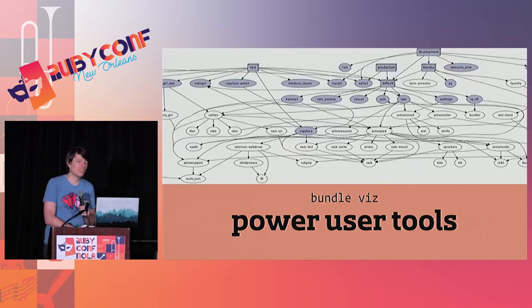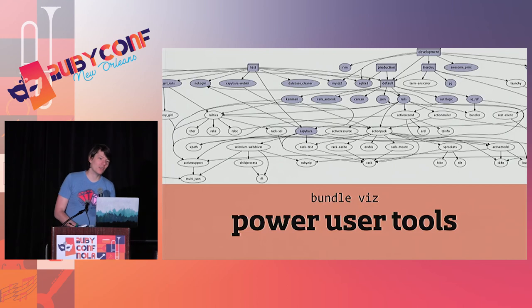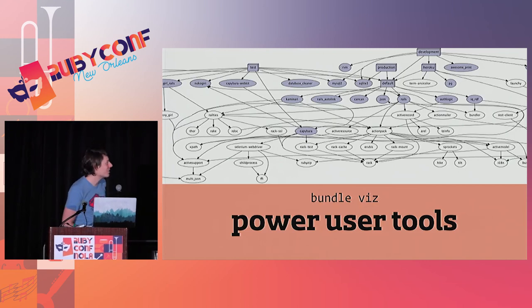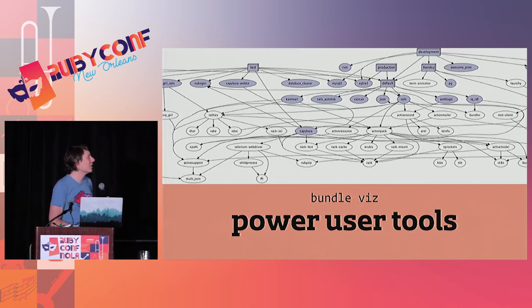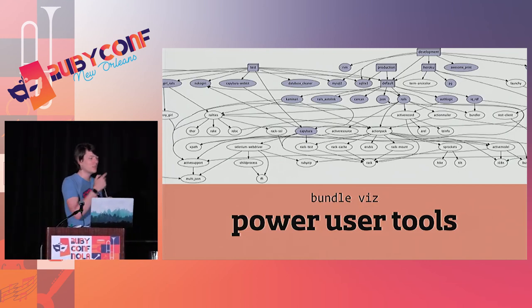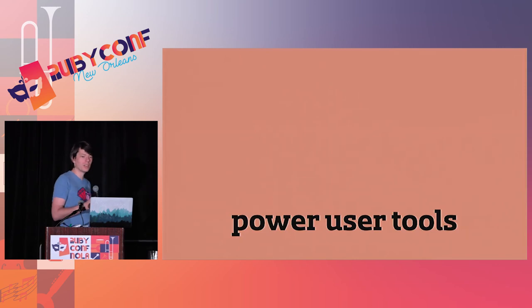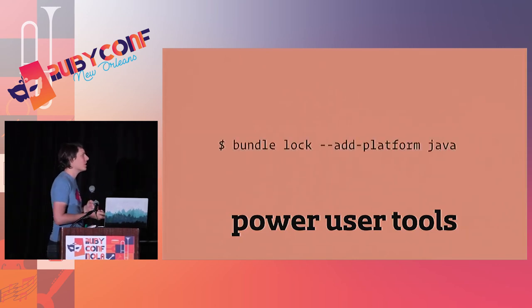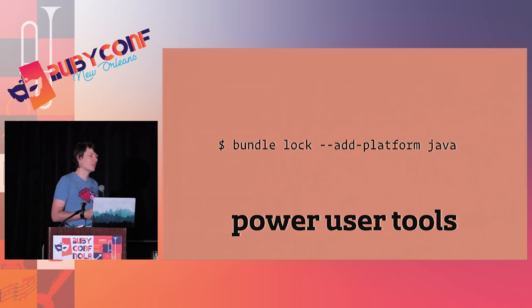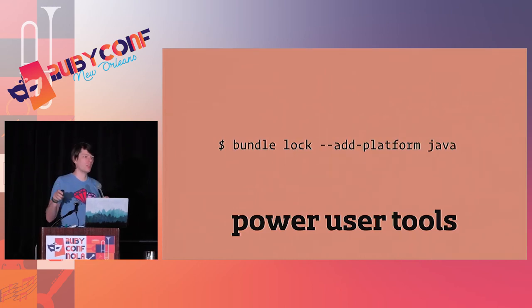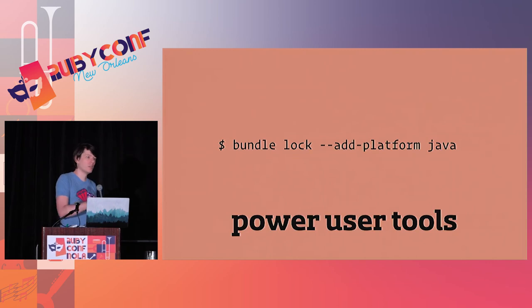Bundle viz lets you see your dependencies in a graph — wow, that's really hard to read, I'm sorry. You too could have a really hard-to-read graph of your application's dependencies. If you want to start running your application on a new platform like JRuby or Windows, you can use that lock option add platform and get a stable Gemfile.lock that won't change as you install on both platforms.